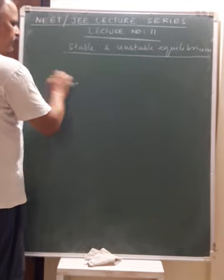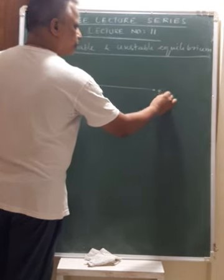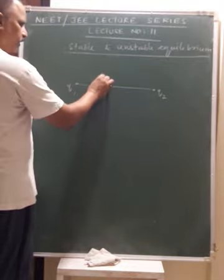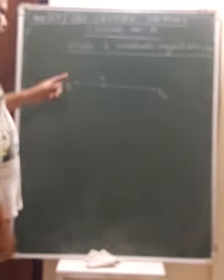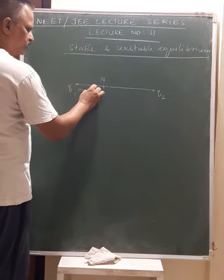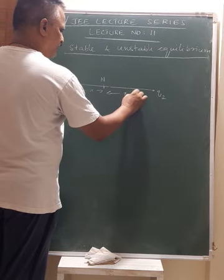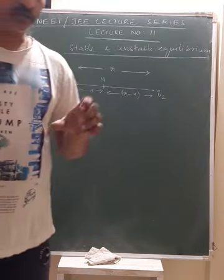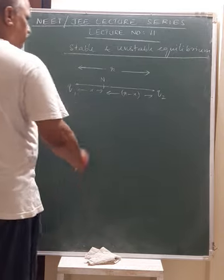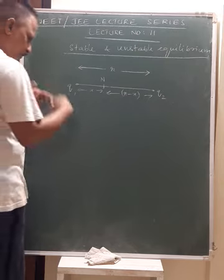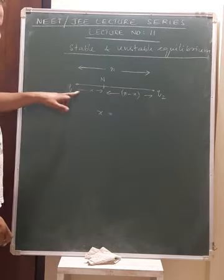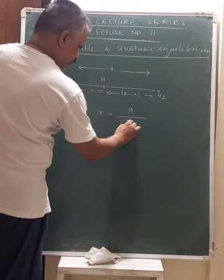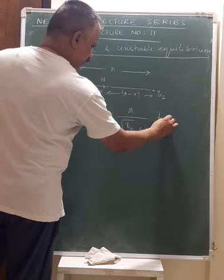If you take two point charges Q1 and Q2, between these two there is a point called the null point. This null point is at a distance x from Q1 and r minus x from Q2. The distance between these two is r. For like charges, we can find the distance of the null point from charge Q1 as r divided by (√(Q2/Q1) + 1).